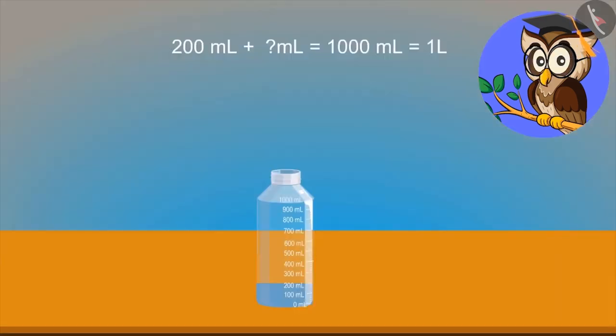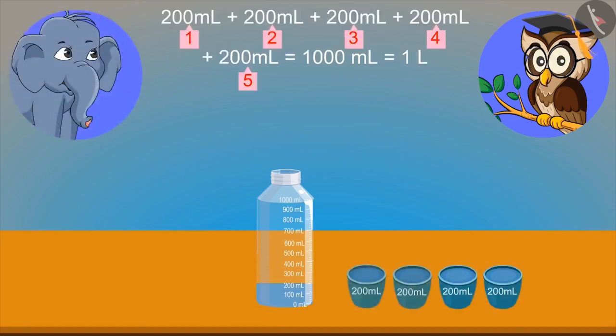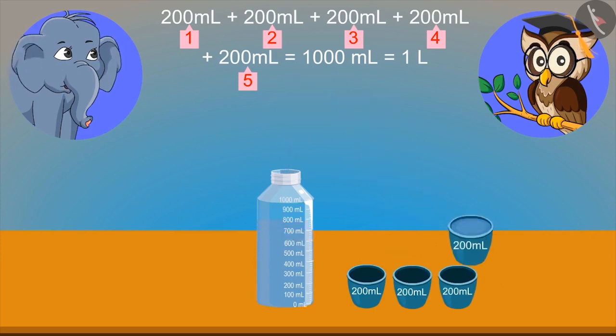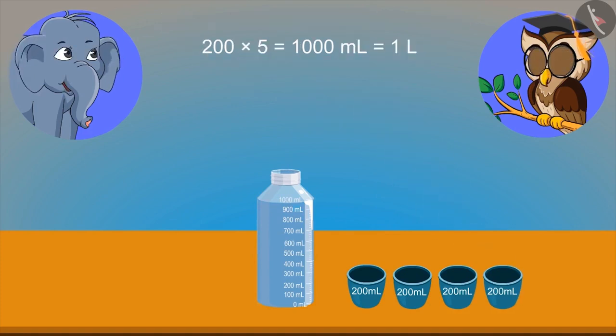Now, answer one more question of mine. This bottle contains 200 ml of water. How many times 200 ml bottles should be added to give 1,000 ml of water? I know that adding 200 ml for 5 times gives 1,000 ml or 1 liter. So, if in this bottle, we pour 200 ml of water for 4 times, then it will become 1 liter. Very good, elephant. 5 times will make 1 liter.